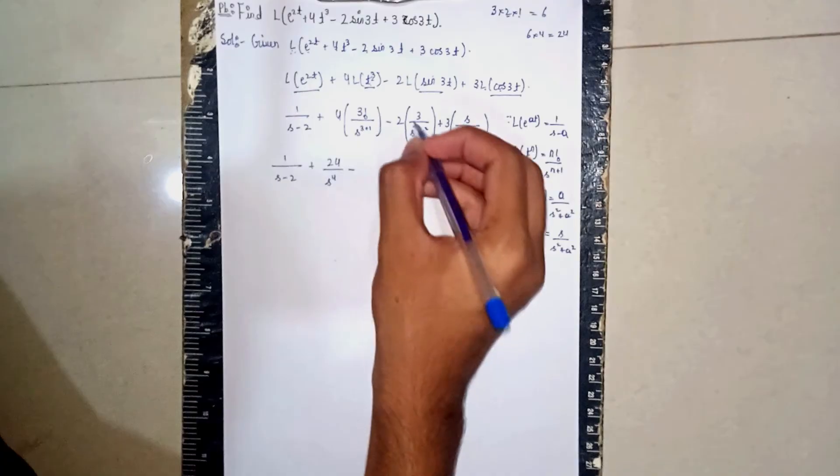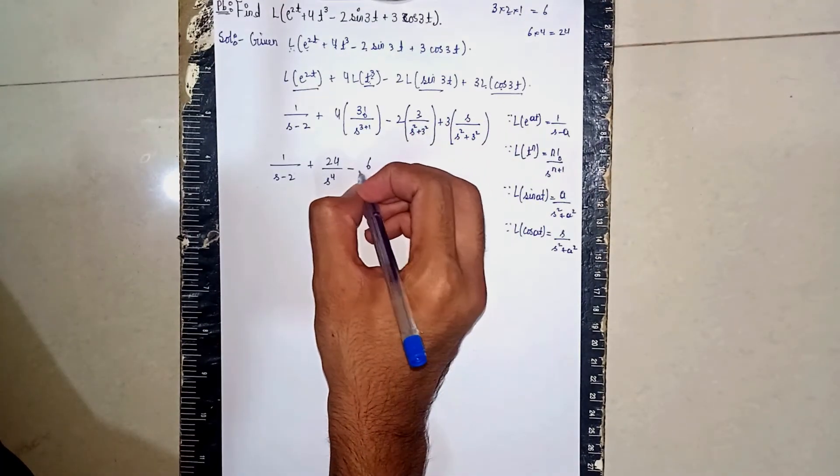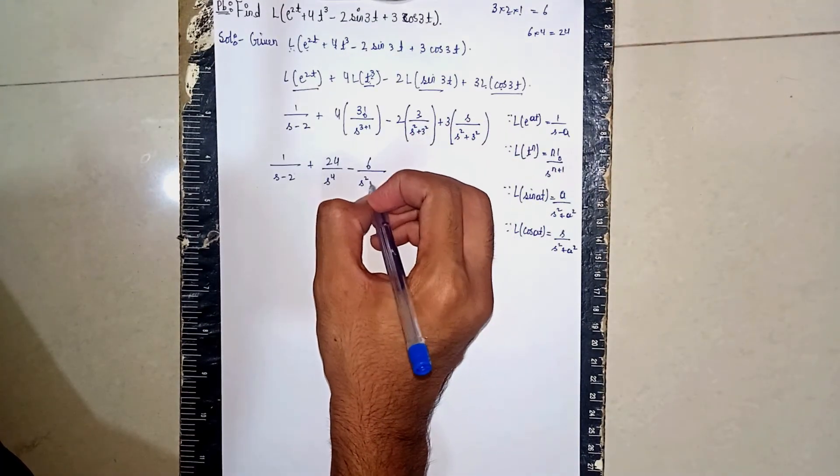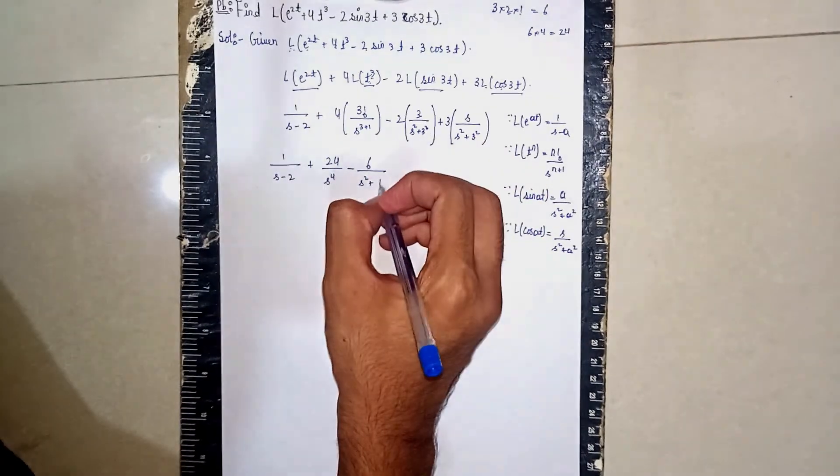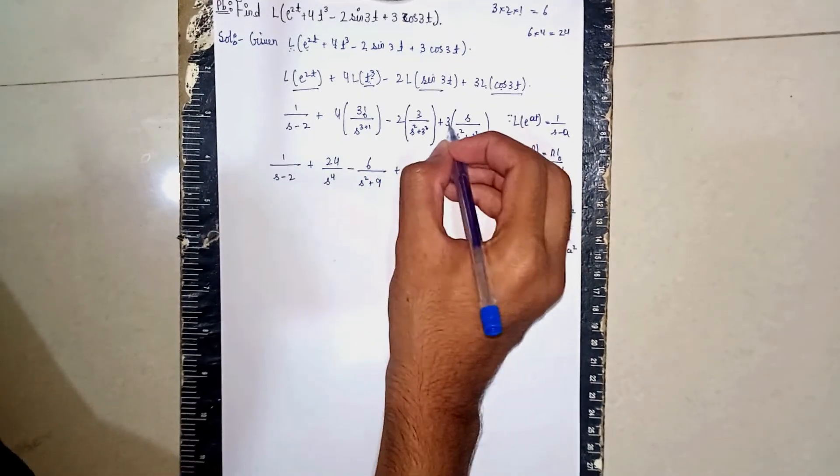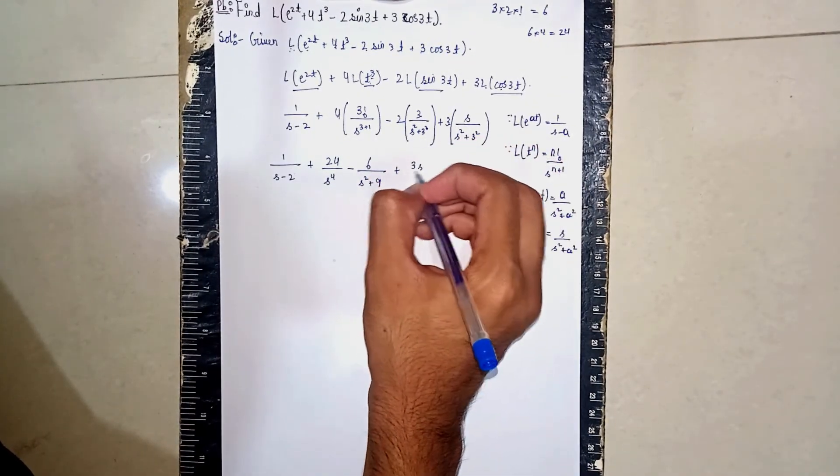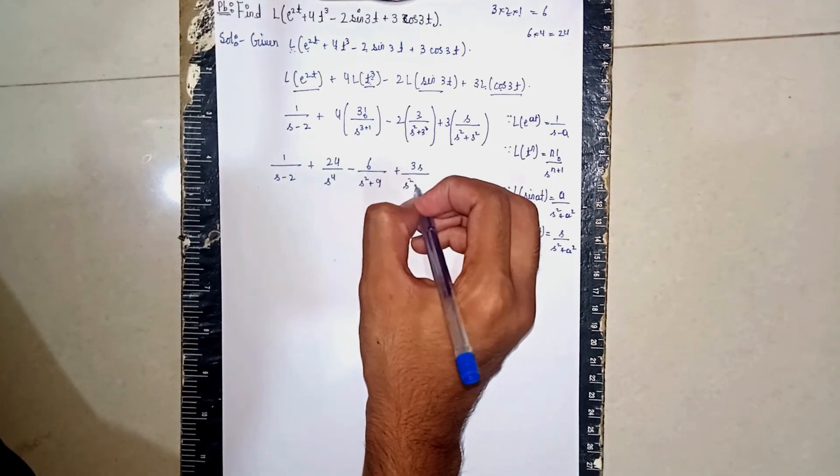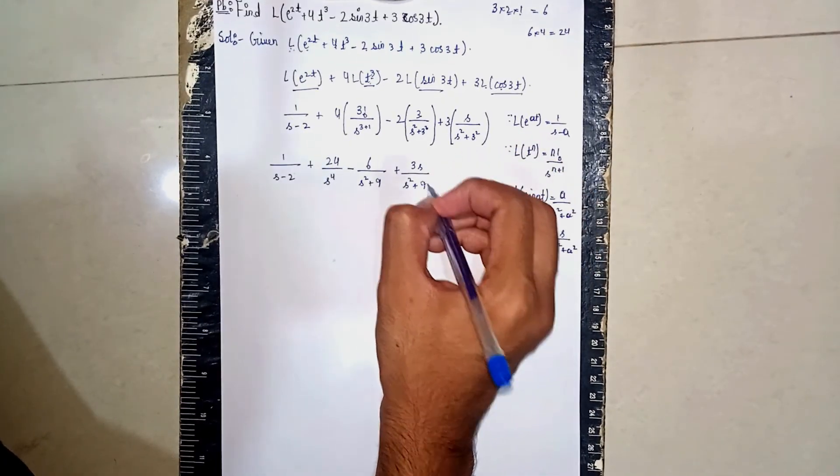Then minus 2×3 is 6, 6/(s^2 + 9), then plus 3×s, 3s/(s^2 + 9). This is our solution.